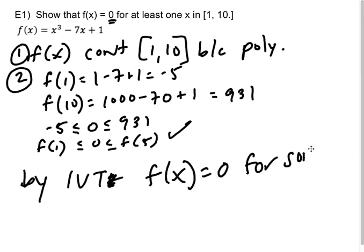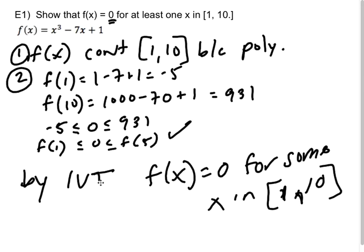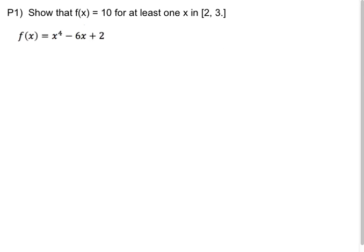f(x) equals zero for some x in that window. And again, my job is to just show the IVT applies and then say, cool. So by the IVT, boom, that's it. You can use the abbreviation IVT for intermediate value theorem. It's pretty common. It's totally fine. So go ahead and try P1. That's the same idea. Notice I want f(x) equal 10 somewhere between two and three.